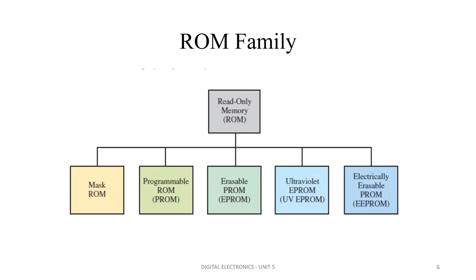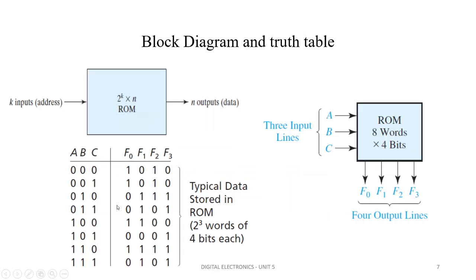The ROM family includes: Mask ROM, Programmable ROM (PROM), Erasable Programmable ROM (EPROM), Ultra-Violet Erasable Programmable ROM (UV-EPROM), and Electrically Erasable Programmable ROM (EEPROM). These are the types of ROM.